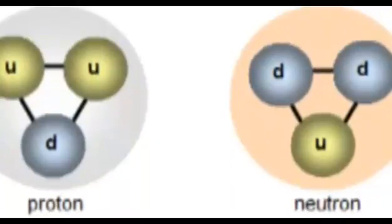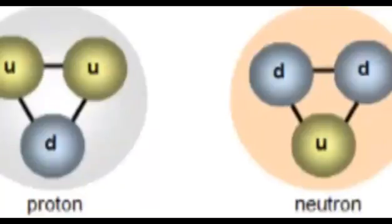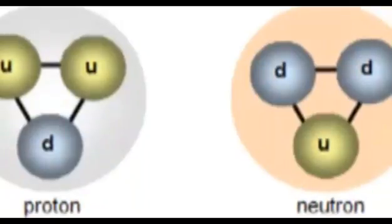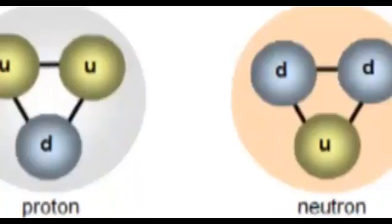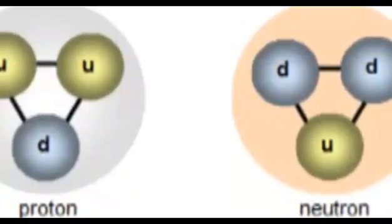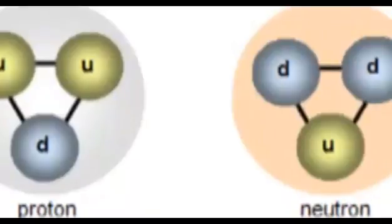The neutron consists of two down quarks and one up quark. One down quark has a charge of -1/3, so two down quarks have a charge of -2/3. That cancels the charge of the up quark, and thus the neutron is neutral.